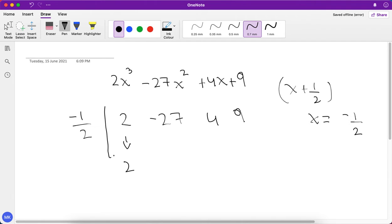We move this 2 down. So -1/2 × 2 is -1, so you get -28 as -27 - 1 is -28. Now if you multiply -28 and -1/2 you get positive 14. So 4 + 14 is 18 and 18 × -1/2 is -9, so you get 0.